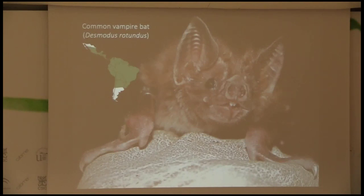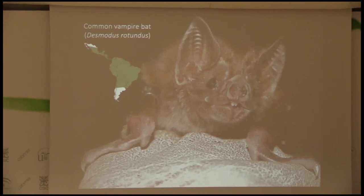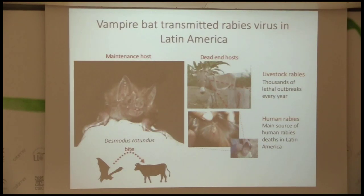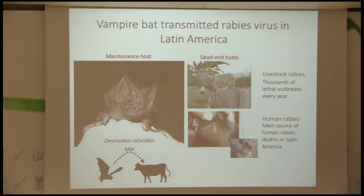Vampire bat rabies: the common vampire bat is quite widespread throughout Latin America. It's a habitat generalist found everywhere from tropical rainforests to inter-Andean valleys to arid coasts on the Pacific side of South America. It's a bat that feeds exclusively on blood every night or two, mostly on other mammals. That creates an incredibly high force of exposure between species — hundreds of thousands of these bats biting hundreds of thousands of other animals every single night. For that reason, we see thousands of cases of livestock rabies every year, since the virus is transmitted in the saliva.